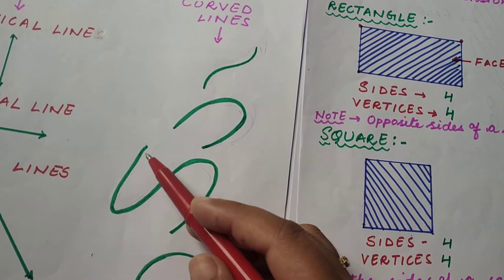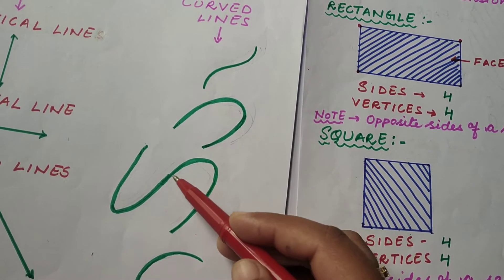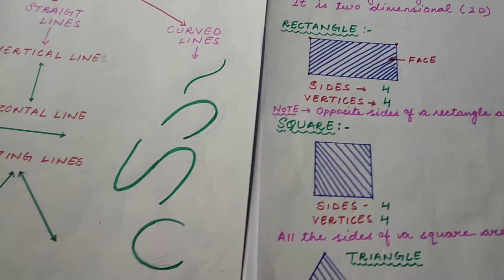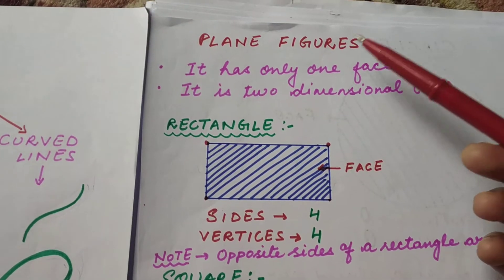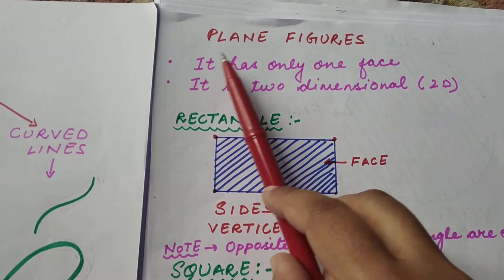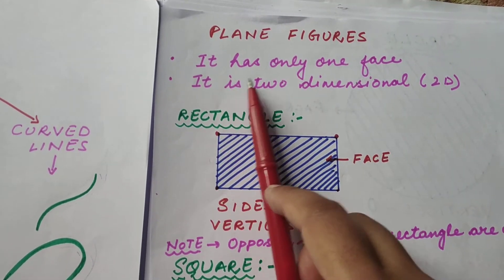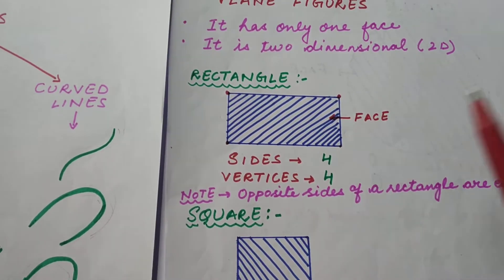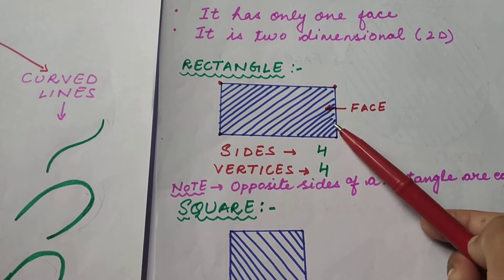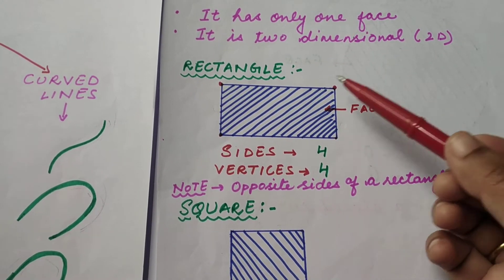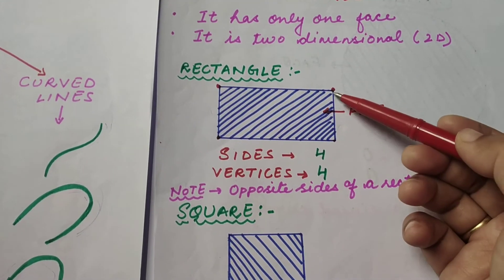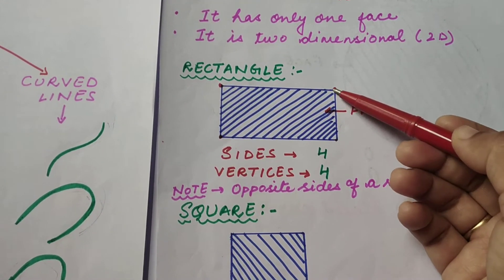Next are plane figures. Plane figures have only one face and they are two-dimensional. The first figure is a rectangle. These figures have only one face, four sides, and four vertices.